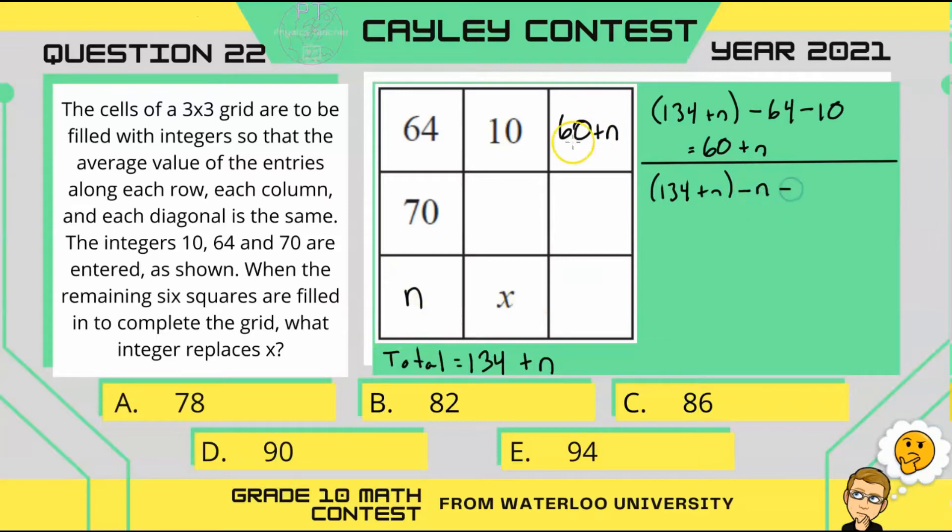So, we have 134 plus n minus n, minus this one, which is 60 plus n, which will reduce to 74 minus n. So, let's write that into this cell.